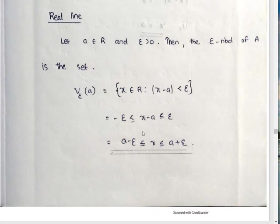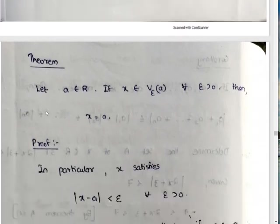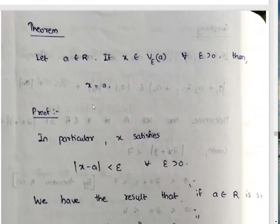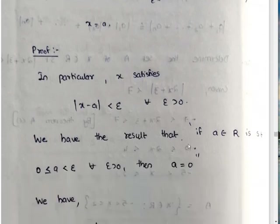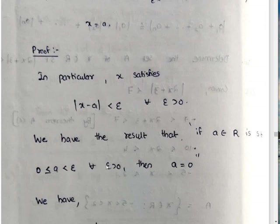Epsilon neighborhood: if A is a real number, then the epsilon neighborhood of A consists of all x element of R such that mod x minus A less than epsilon, for every epsilon greater than 0.